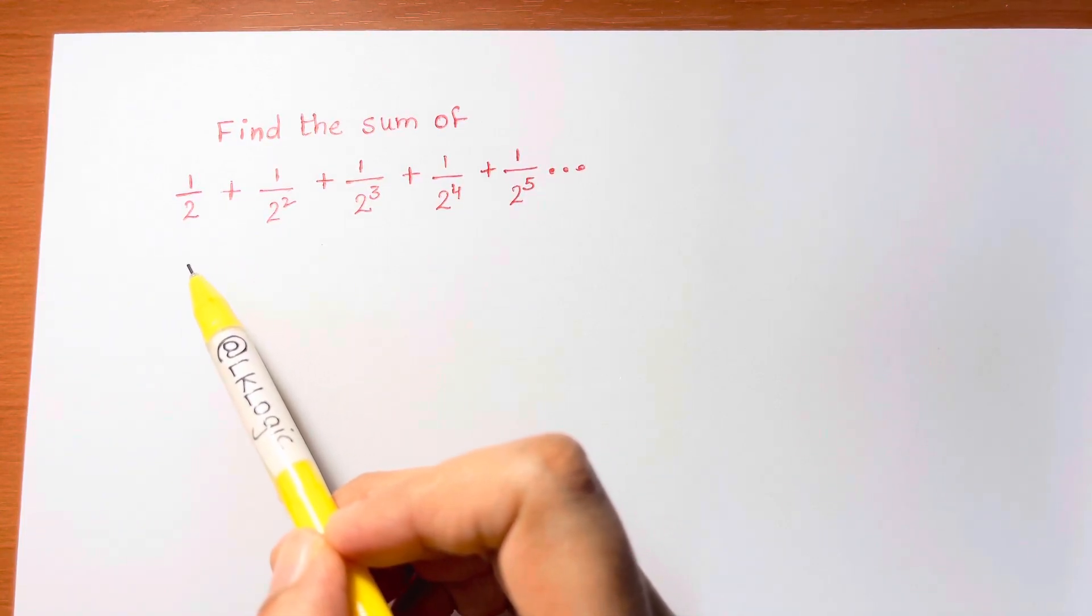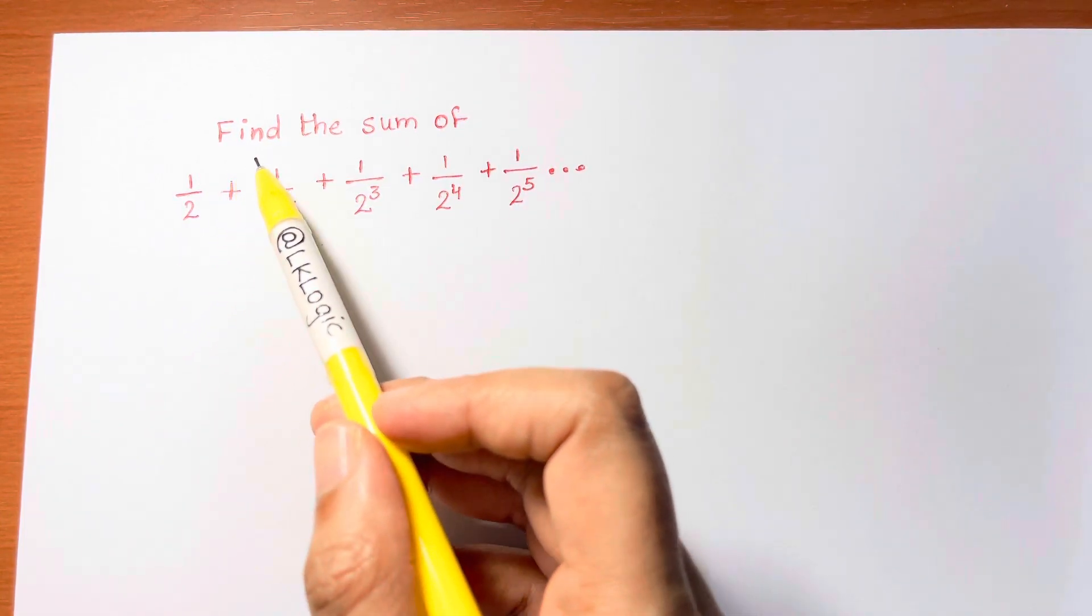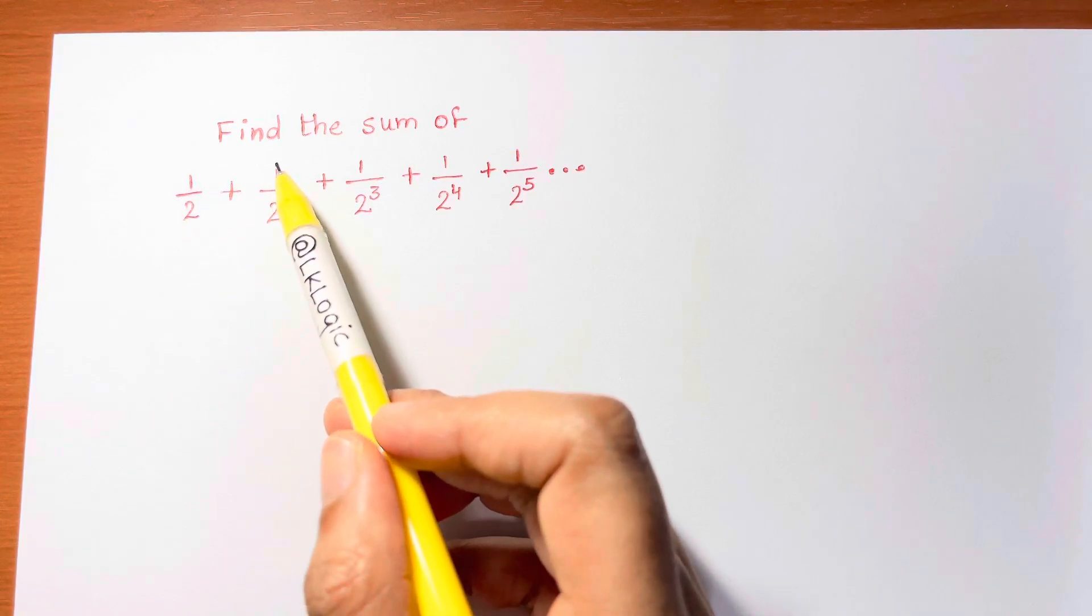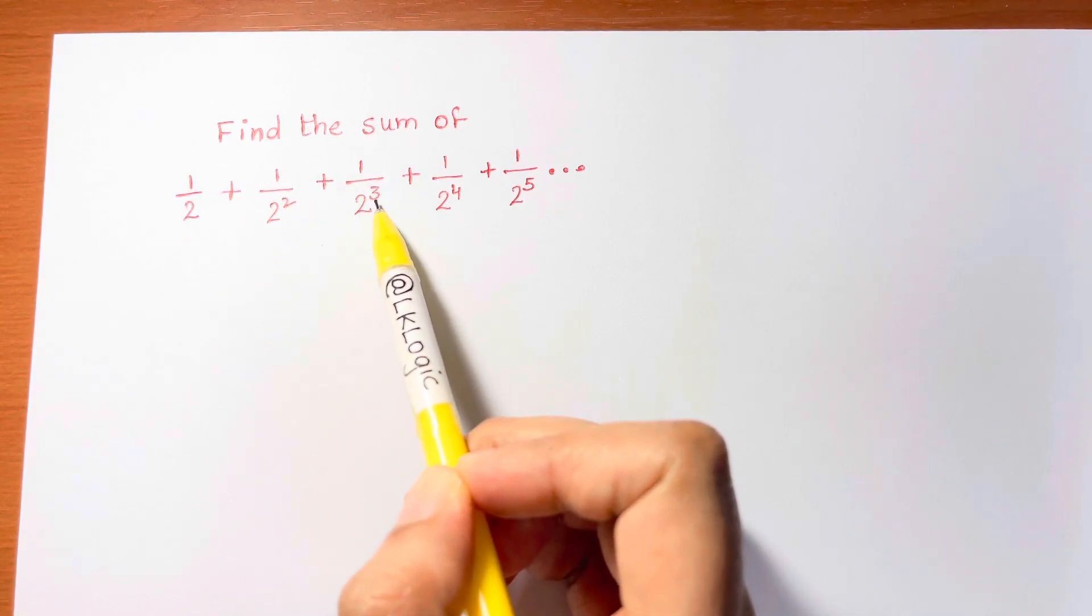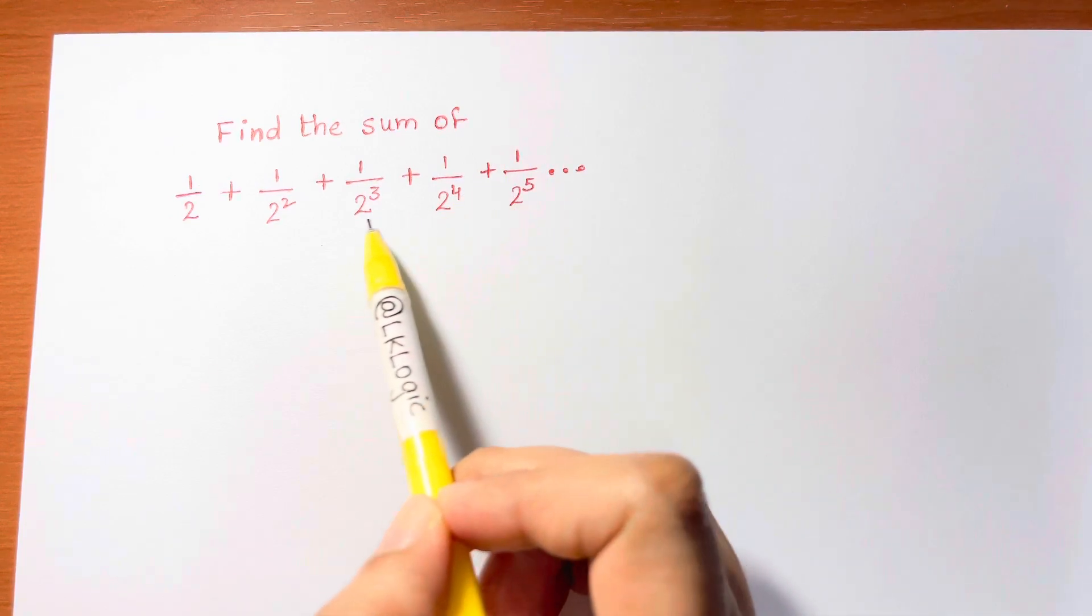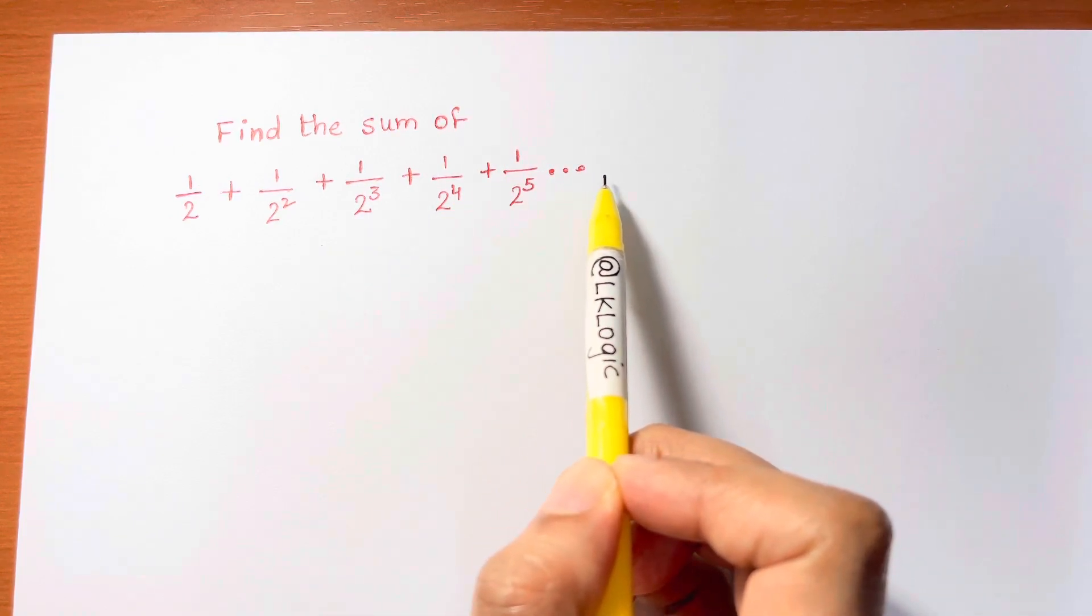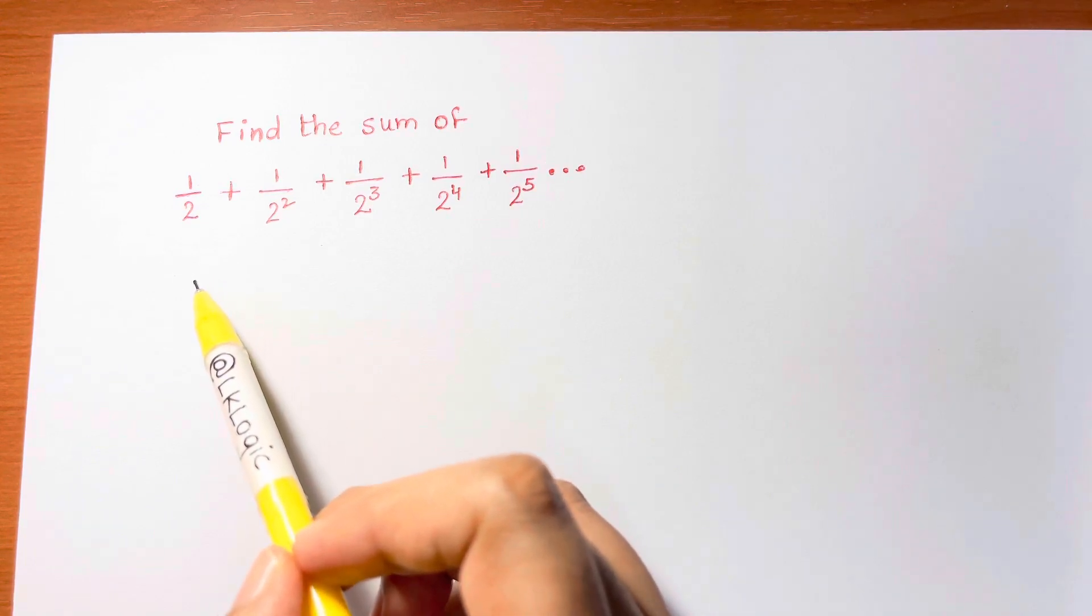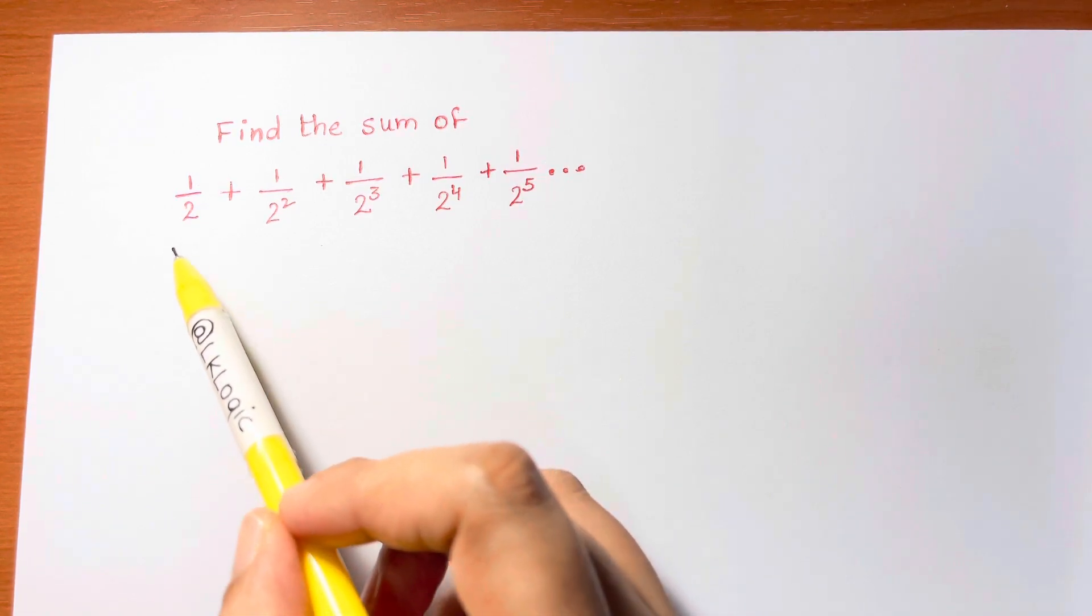Hi guys, I have an interesting problem for you all. Find the sum of 1 over 2 plus 1 over 2 squared plus 1 over 2 cube plus 1 over 2 to the 4 plus 1 over 2 to the 5 and so on. It continues, is equal to what? So we just need to find out.